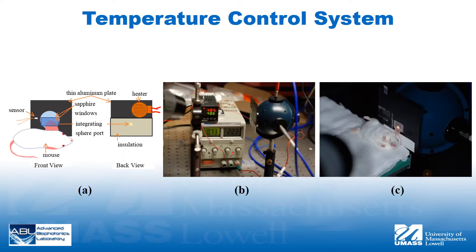The temperature control system is shown here, with the schematic in panel A and photographs in panels B and C. Mouse ears were sandwiched between two sapphire windows and placed on top of an aluminum plate. The aluminum plate had a hole the size of the entrance and exit ports of the integrating sphere, which enabled light to pass through and enter the integrating sphere.